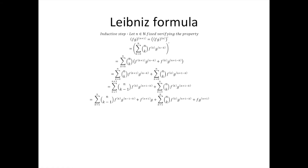Plus the (n+1)th derivative of f times j, plus the sum from k equal to 1 to n of n choose k, times the kth derivative of f times the (n+1 minus k)th derivative of j, plus f times the (n+1)th derivative of j.